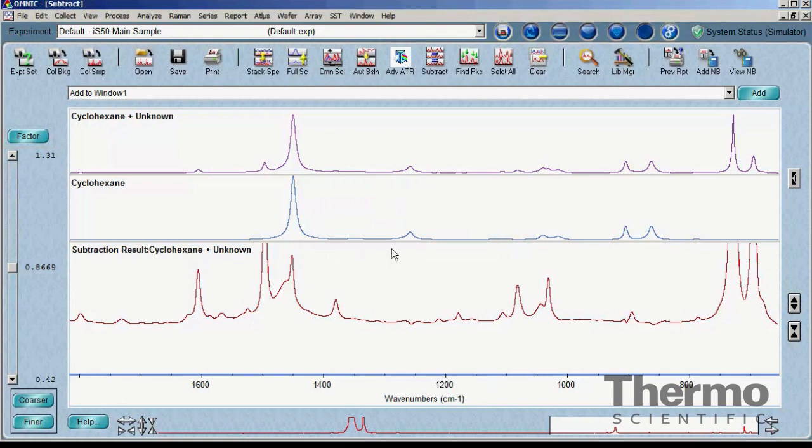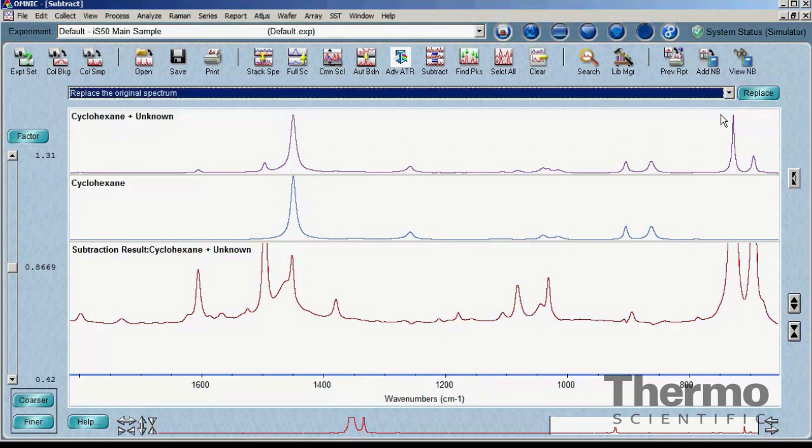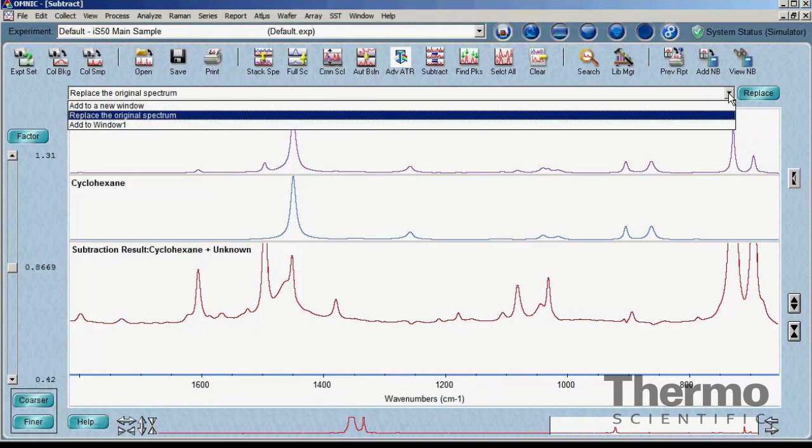To complete the subtraction and save the result into an Omnic spectral window, use the button found to the right of the title bar, just above the top spectral frame. This button will either display the words add or replace, depending on the desired result. This can be changed by dropping down the list on the title bar and selecting the needed result. It is not recommended to replace the original mixture spectrum unless it has been saved so it can be recalled if needed.